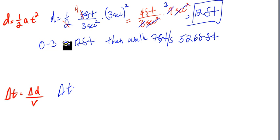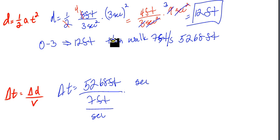So my change in time is equal to my new distance, which is 5,268 feet. My new velocity, which is 7 feet per 1 second. And I'm going to multiply this by the reciprocal.